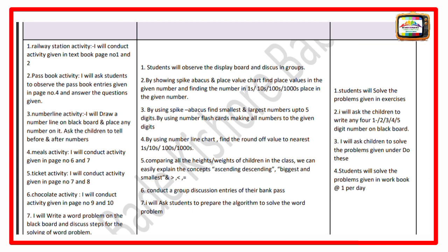There are seven activities in group activities and four activities in the workbook for independent work. I will ask students to solve the problems in the given exercises and write any four one, two, three, four, or five digit numbers on the blackboard. I will ask children to solve the problems given under 'Do These.' Students will solve the problems given in the workbook at the rate of one per day, covering workbook activities, textbook exercises, and independent work.